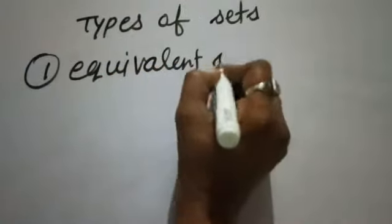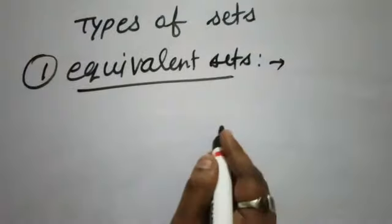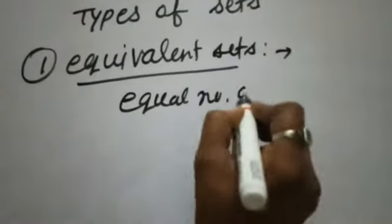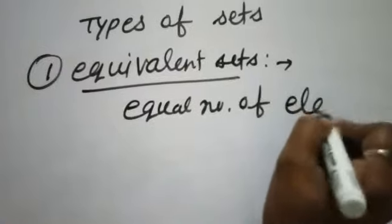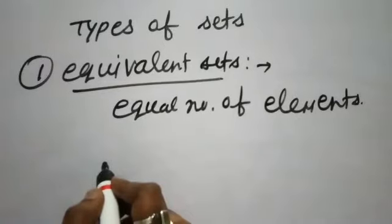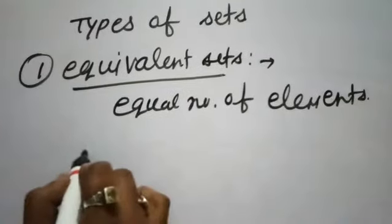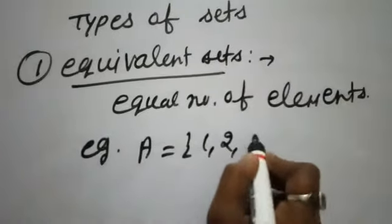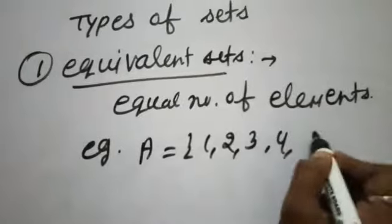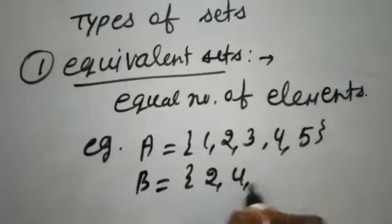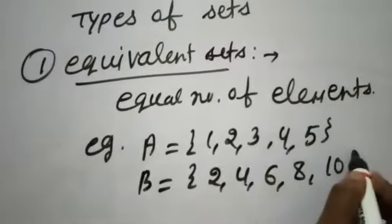Equivalent set means if two or more than two sets have equal number of elements — it means both the sets have equal number of elements — so they are known as equivalent sets. Let us see one example. If set A has elements 1, 2, 3, 4, 5 and set B has elements 2, 4, 6, 8, 10.